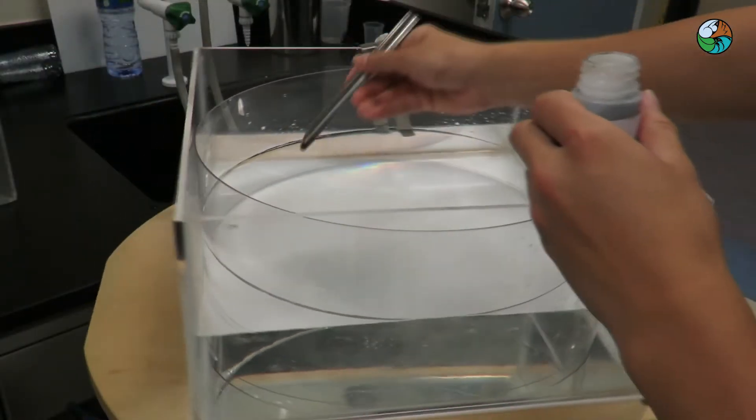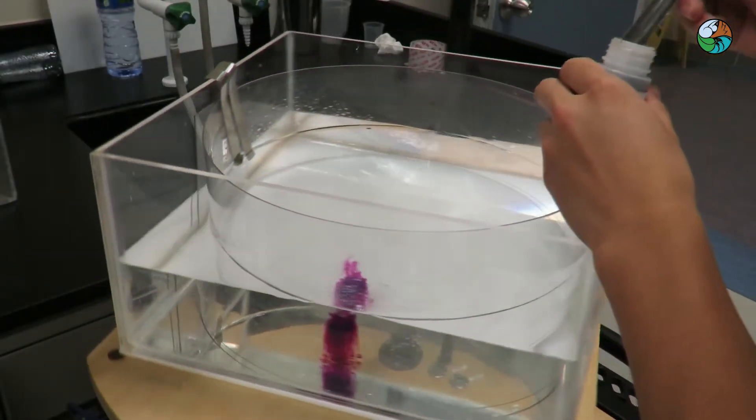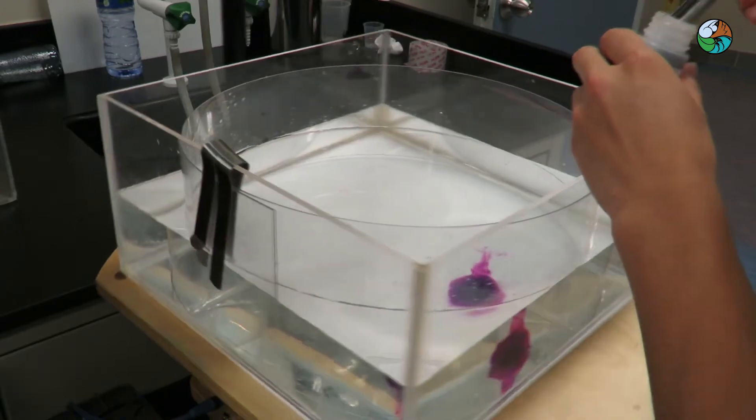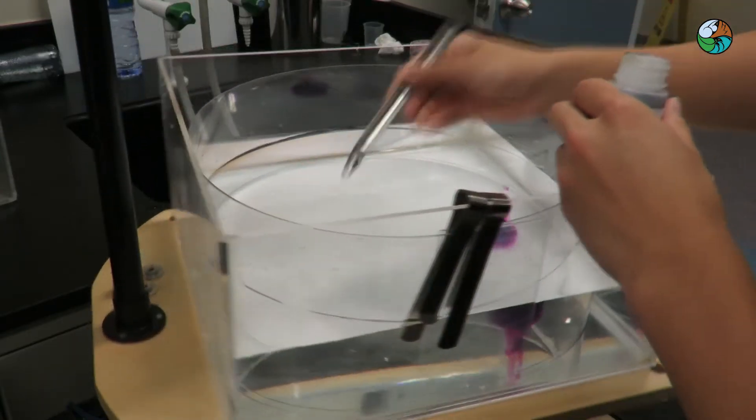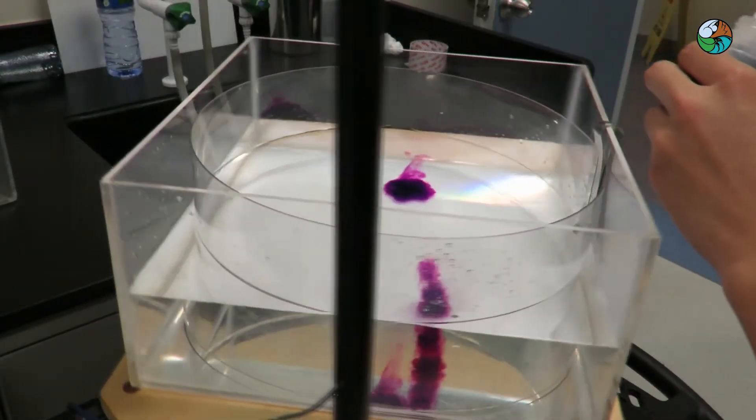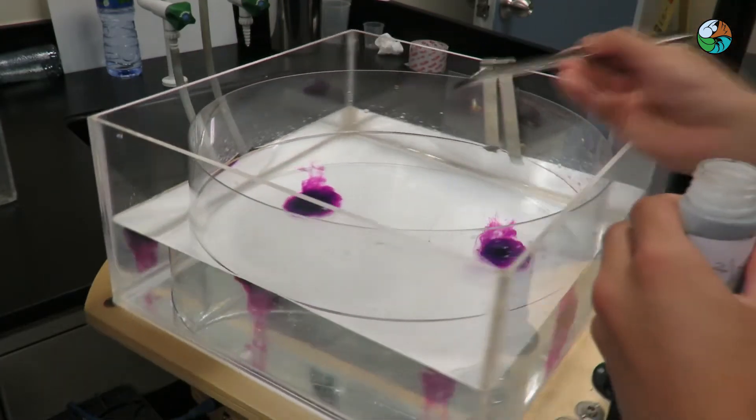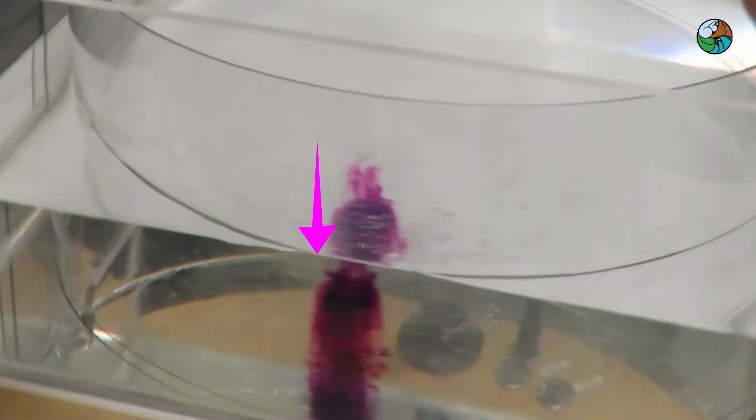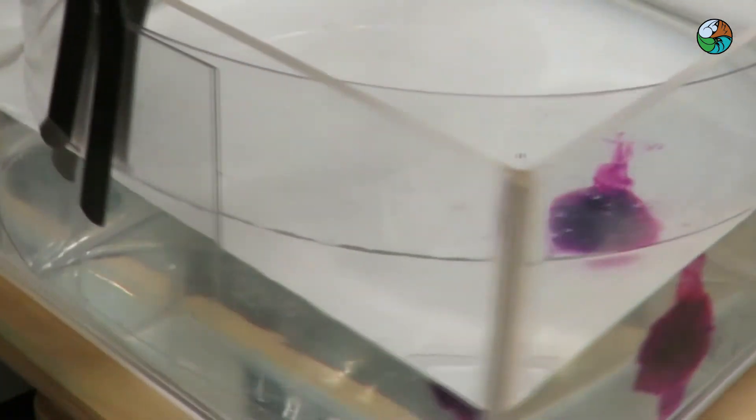Then, sprinkle some potassium permanganate crystals at some distance from the center. As we have reached solid body rotation state, the potassium permanganate should not have relative motion with the water.